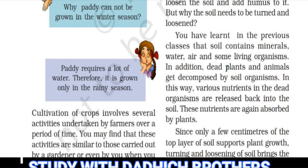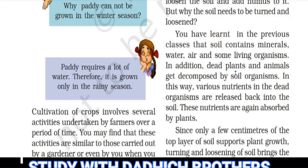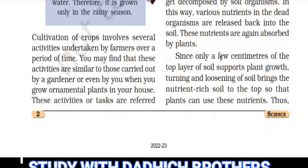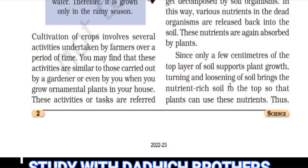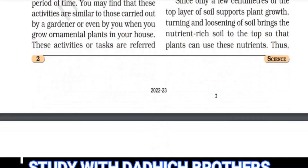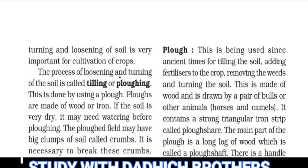You have learned that soil contains minerals, water, air and some living organisms. In addition, dead plants and animals get decomposed by soil organisms, and the nutrients in the dead organisms are released back into the soil, which are then absorbed by plants. Since only a few centimetres of the top layer of soil supports plant growth, turning and loosening of soil brings the nutrient-rich soil to the top so that plants can use these nutrients. Thus turning and loosening of soil is very important for cultivation of crops.